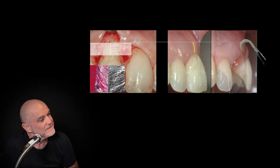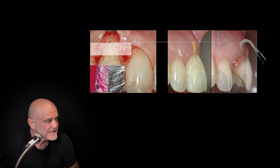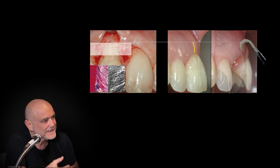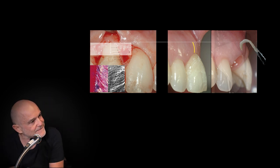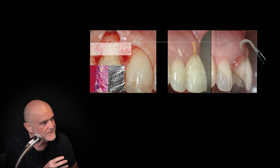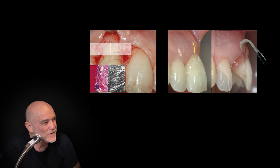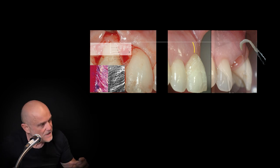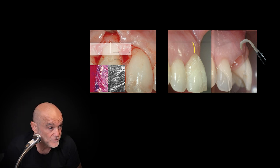The connective graft serves to compensate for the loss of the supraosseous component at the vestibular level, but it has to be stretched to include the entire mesial papilla and the entire distal papilla. You understand that a graft in such a coronal position, extended to the base of the papilla, can never be applied with flap techniques.